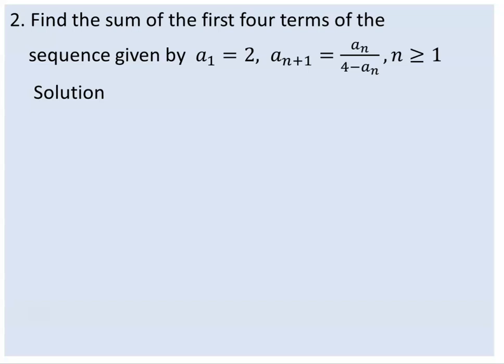Now we have a recursive sequence where a1 equals 2, and a(n+1) equals a(n) over (4 minus a(n)).